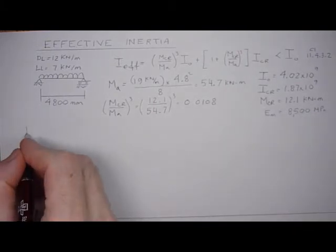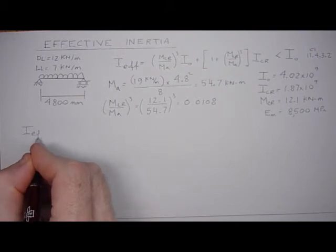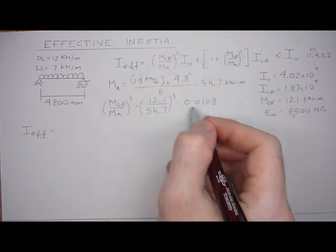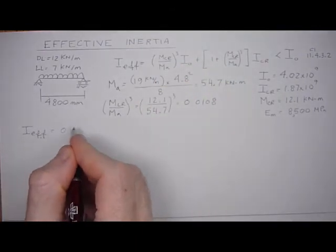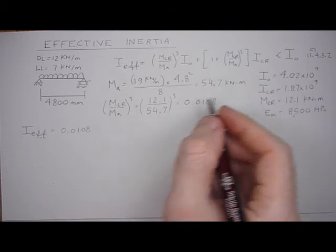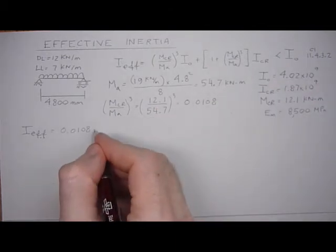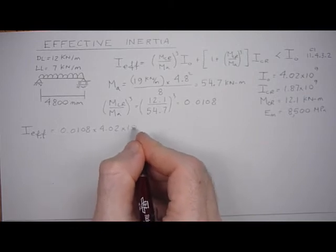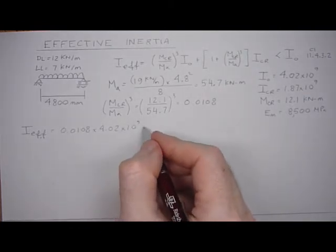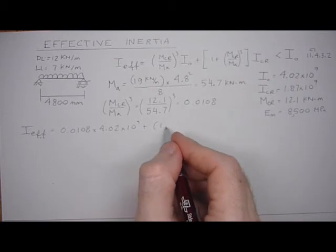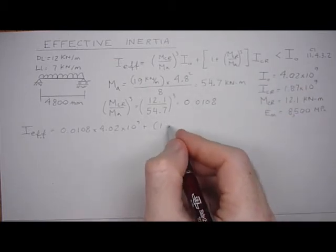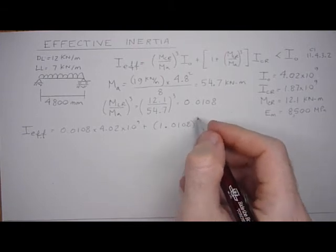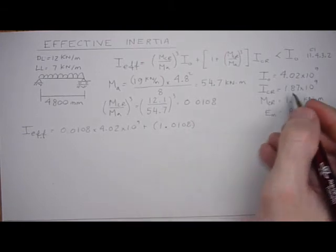So okay, let's calculate the I effective. So this term is 0.0108 times I naught 4.02, plus 1 minus this value 0.0108 times I cracked 1.87.